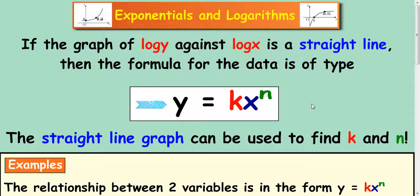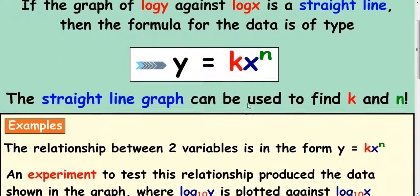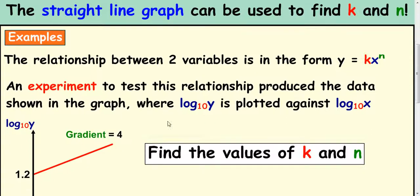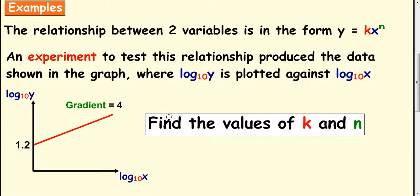In this lesson we're going to look at another example of how to work out the values of k and n from y equals kx to the power n. We'll start with this: the relationship between two variables is in the form y equals kx to the n. An experiment to test this relationship produces the data shown in the graph, where log y to the base 10 is plotted against log x to the base 10.